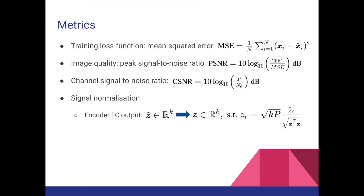During training, we use the mean squared error loss metric because we measure image quality using the peak signal-to-noise ratio metric, which has an inverse relationship with the mean squared error of the image. So as we reduce the mean squared error, we thereby increase the peak signal-to-noise ratio. We also measure the channel condition using the channel signal-to-noise ratio metric, and we normalize the transmitted signal to satisfy the power constraint.